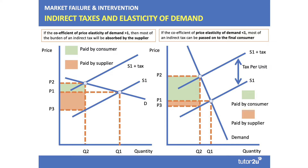First, a couple of slides on indirect taxes. This is an indirect tax imposed by the government on the supplier, and one of the key aspects here is who pays the tax — the burden of the tax. When demand is fairly price elastic, as on the left-hand side of this diagram, a tax shifts the supply curve and most of that tax is absorbed by the supplier — the orange area. The price goes up from P1 to P2 and most of the tax is absorbed by the supplier. The total tax revenue is the green plus the orange area.